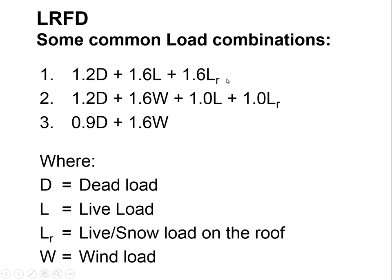This contrasts with allowable strength design, where instead of separate factors for each load, we say that under the full combination of dead plus live plus roof live, the stress within the material should never exceed some fraction of the yield stress, such as 0.6 times the yield stress.